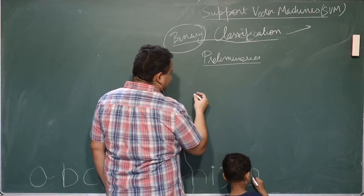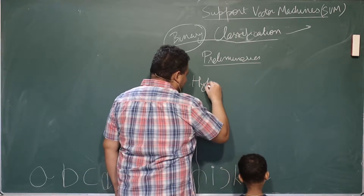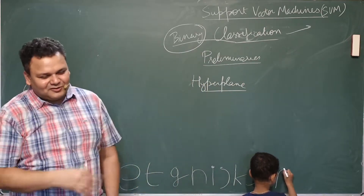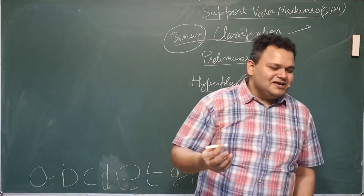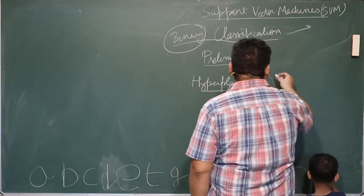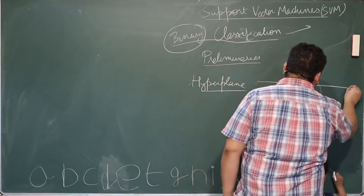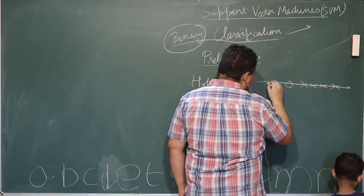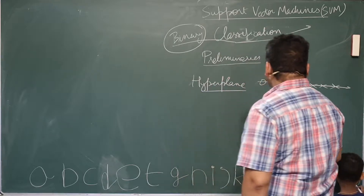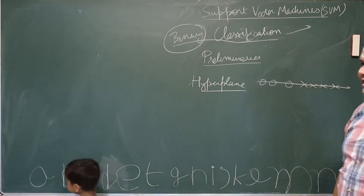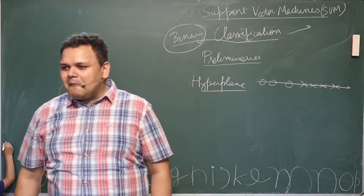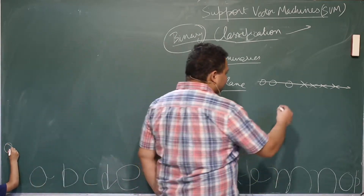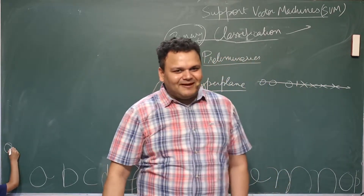The first preliminary that we are going to talk about is a hyperplane. We have talked about this, but a little less formally than we are going to do today. If we have one-dimensional data, which looks something like this, we found out what the decision boundary would be in this case — a point.